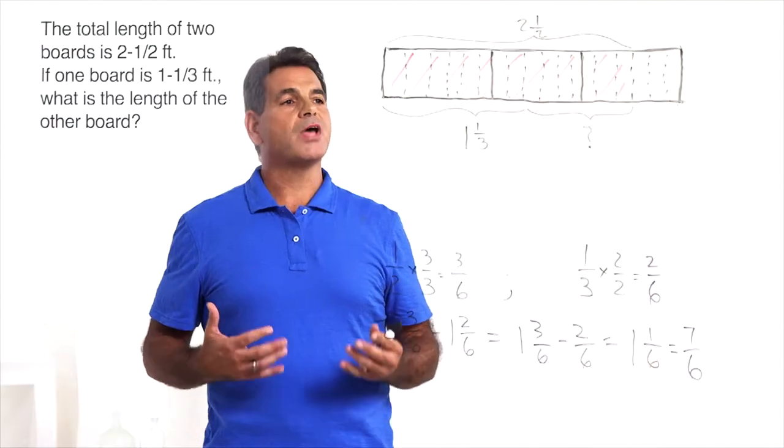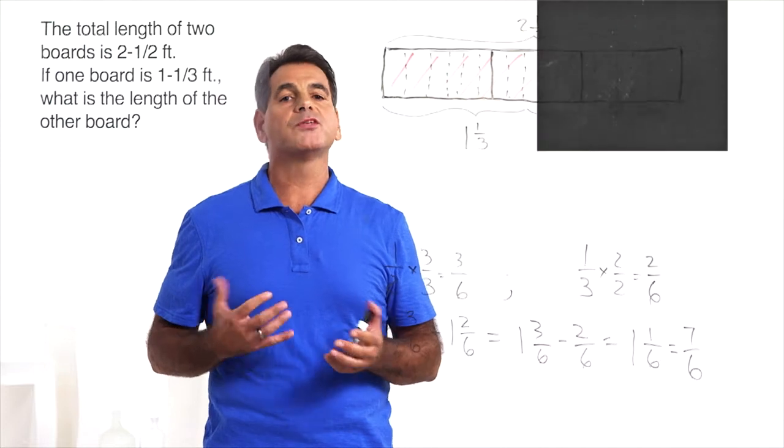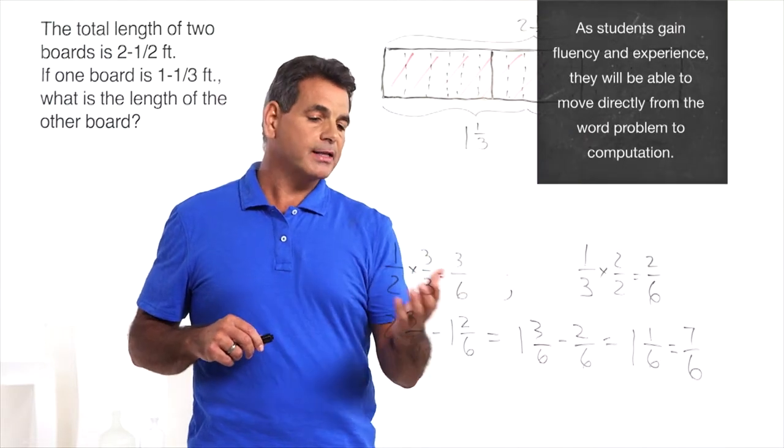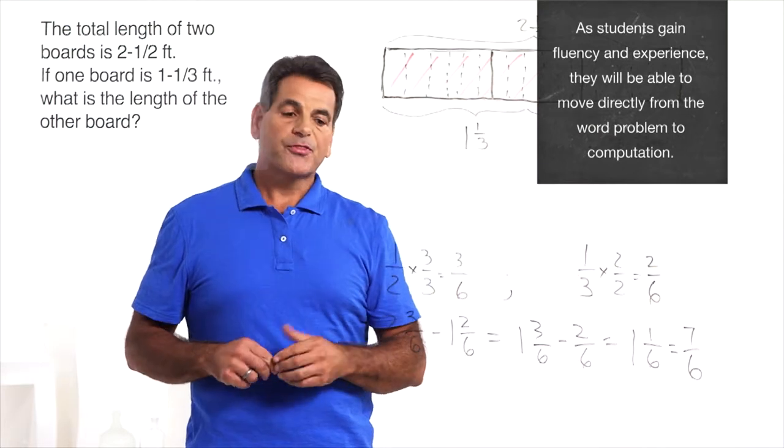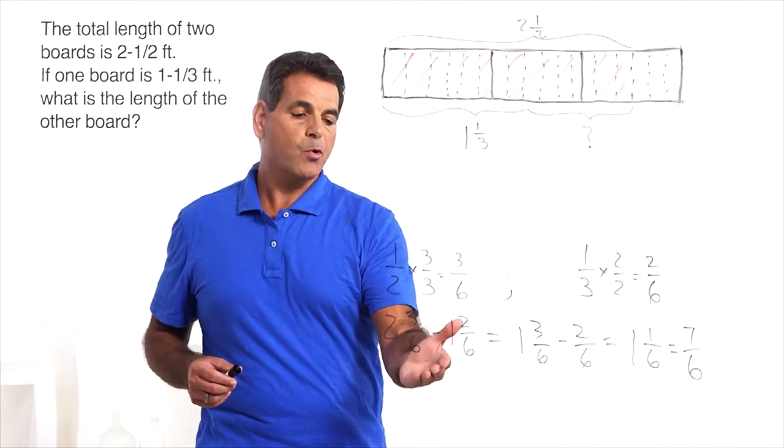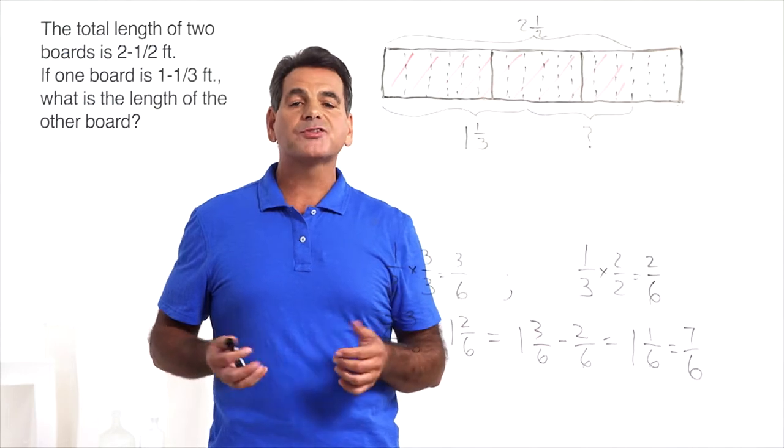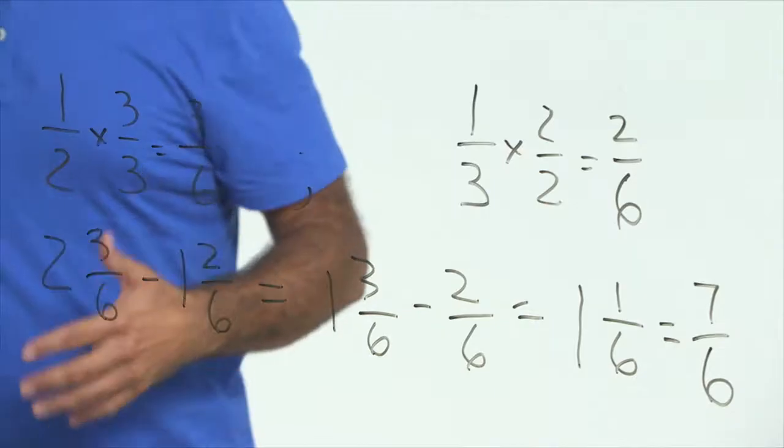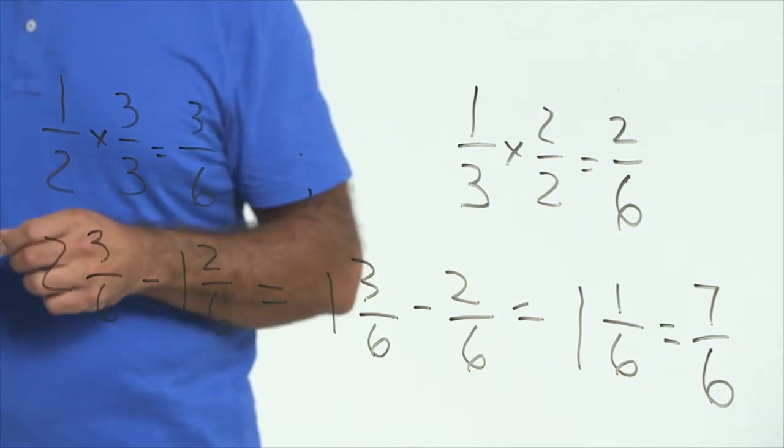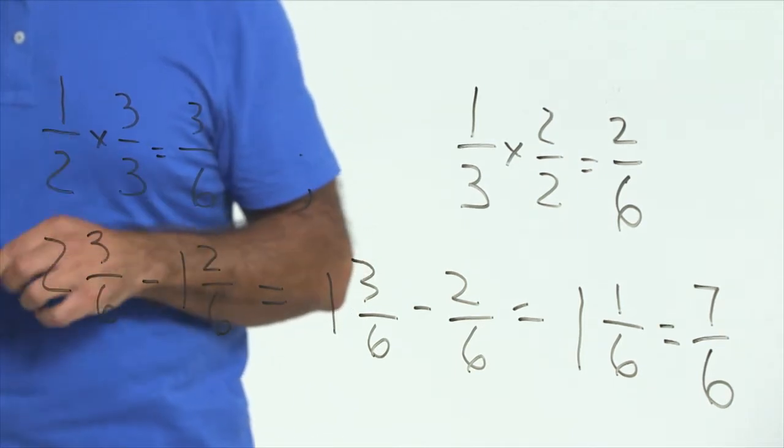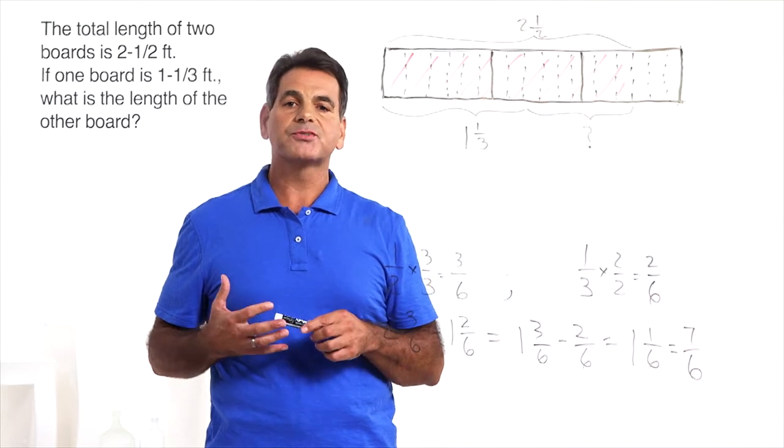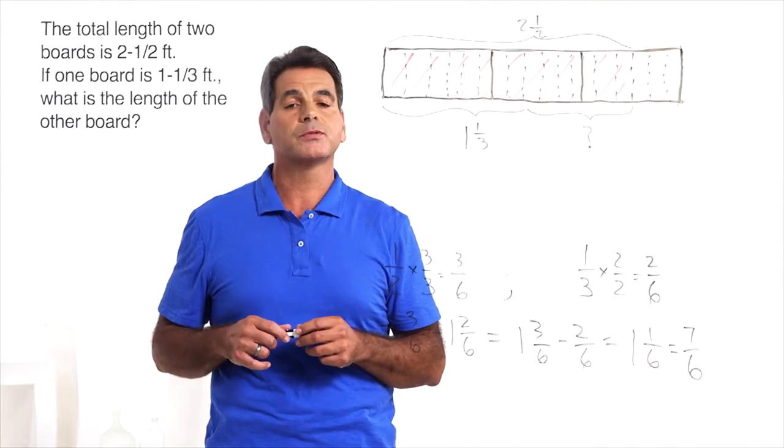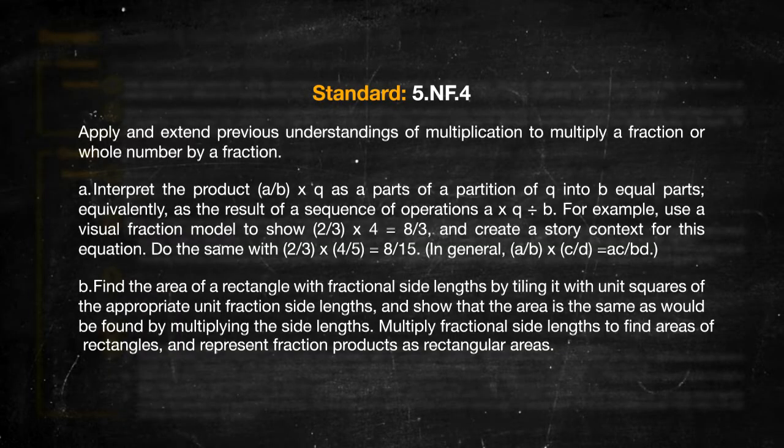Using a bar model to solve this problem does four things for the student. It allows them to visualize the problem. Secondly, it allows them to find common denominators. Third, we were able to write the equation. And finally, we can estimate the reasonableness of the answer. I think that covers everything in the standard. Notice that in all of the examples, I was writing the equations horizontally. Adding and subtracting fractions and mixed numbers vertically can lead to errors due to disorganization of numbers. On to standard 5.NF.4.